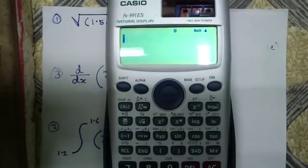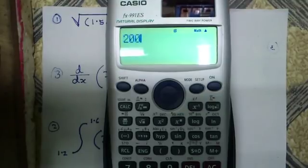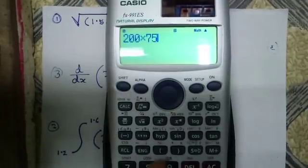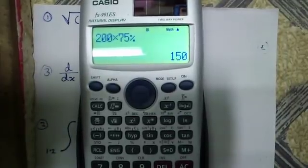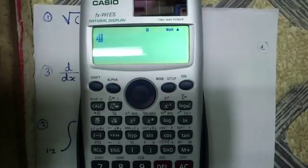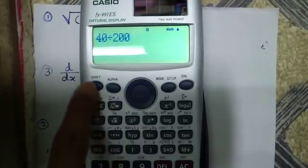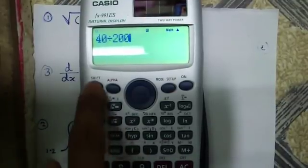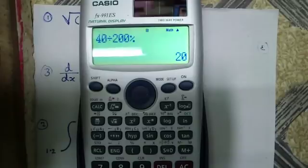The fourth feature is percentage calculation. Suppose I want to know what 75 percent of 200 is — it must be 150. Enter 200 times 75 using shift and left parenthesis for percentage, which gives 150. We can also find what percent 40 is of 200: 40 divided by 200 using shift and percentage gives 20 percent.